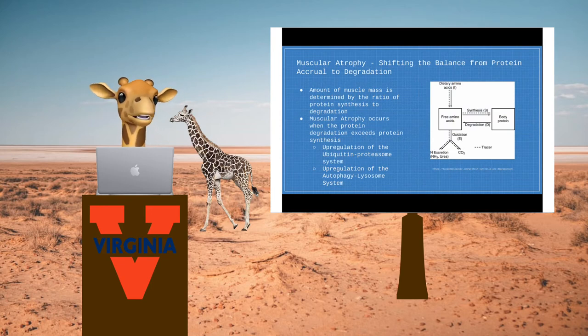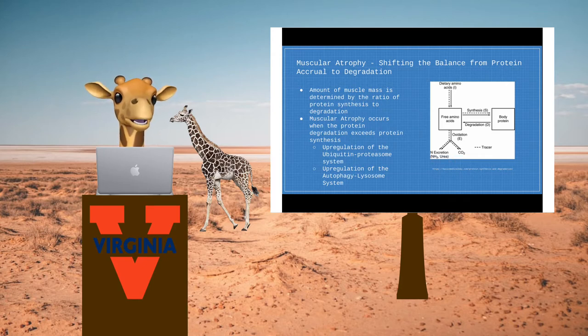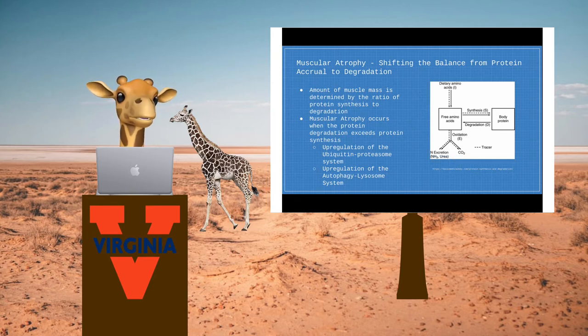Atrophy is mainly dictated by the shift towards muscle protein degradation and away from muscle protein synthesis. In fact, the amount of muscle mass in any given person is determined by the ratio of protein synthesis to protein degradation. Two main pathways cause the degradation of muscle protein in skeletal muscle and when upregulated result in atrophy. Those two pathways are the ubiquitin proteasome system and the autophagy lysosome system.